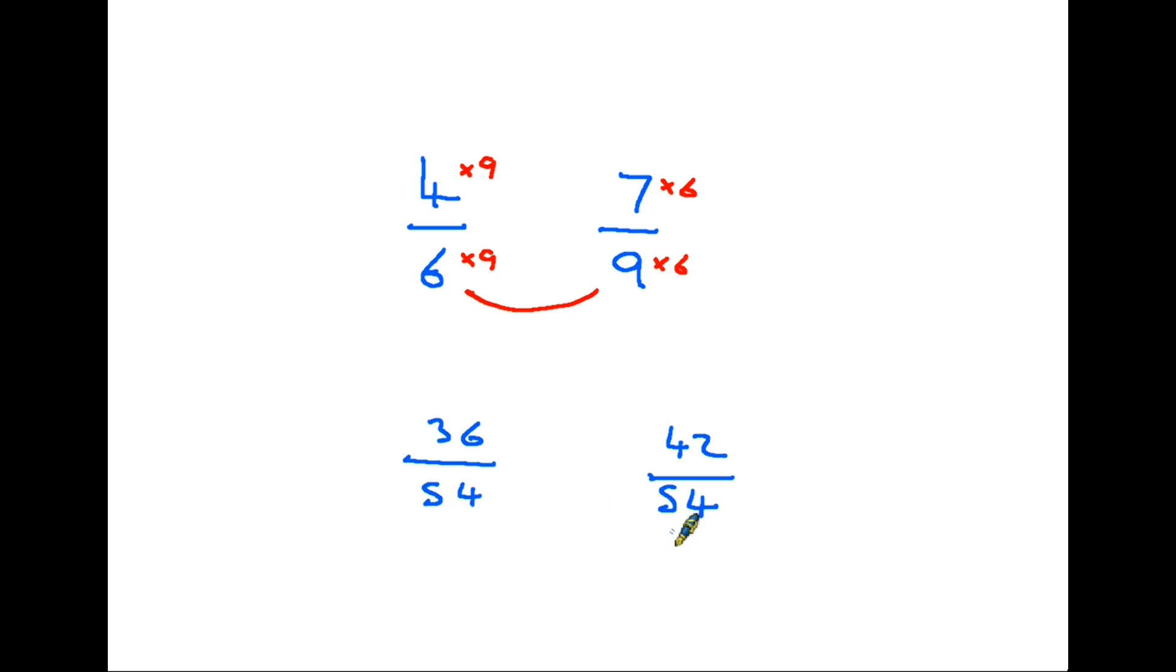Now again we've got two fractions. They've both got 54 on the bottom. So all we have to do now is compare the top two numbers. 42 is larger than 36. So the symbol we put 36 over 54 is smaller than 42 over 54.